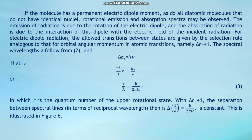If the molecule has a permanent electric dipole moment, as do all diatomic molecules that do not have identical nuclei, potential emission and absorption spectra may be observed. The emission of radiation is due to the rotation of the electric dipole and the absorption of radiation is due to the interaction of this dipole with the electric field of the incident radiation. For electric dipole radiation, the allowed transitions are given by the selection rule δR = ±1. The spectral wavelength λ follows from Formula 2 and ΔE_R = hν, giving: ℏ²/I · R = hc/λ, or 1/λ = ℏ/(2πI·c) · R, a constant spacing.